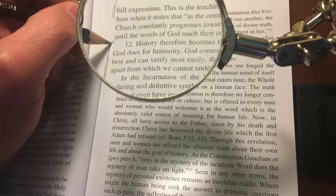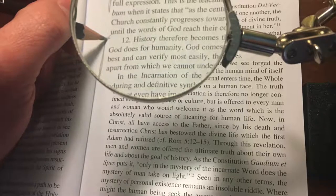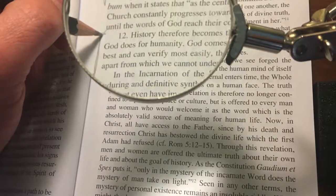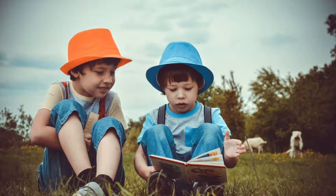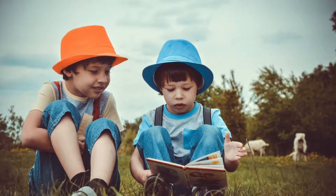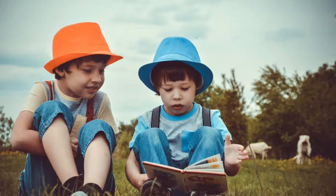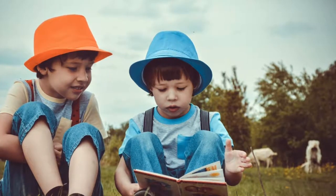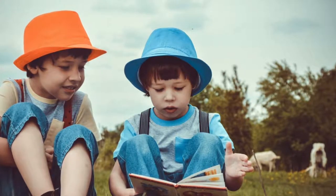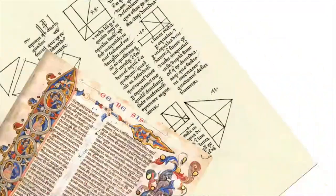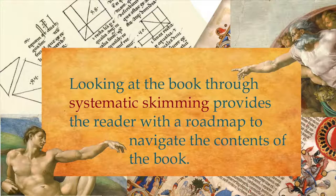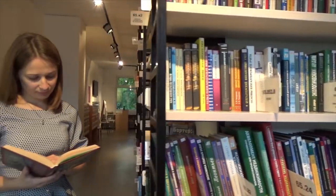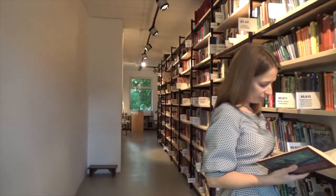As you're thumbing through the contents, you may also want to dive in and out of the text and take a quick look at the introductory paragraph of each chapter and the concluding paragraph. In the introduction the author sets up the content, and in the conclusion they highlight their main points — a great strategy for getting familiar with the contents. Looking at the book through systematic skimming provides the reader with a roadmap to navigate the contents. This process can take anywhere from 15 minutes to an hour, depending on how much you want to dive in and out.